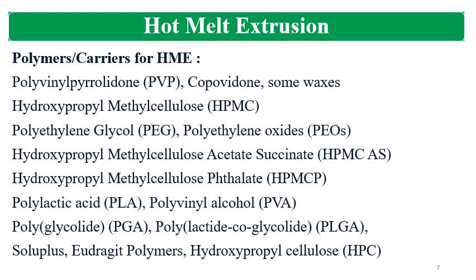Additional polymers for HME include HPMC, polyethylene glycol (PEG), polyethylene oxide (PEO), HPC, HPMC acetate succinate (HPMC-AS), HPMC phthalate, polylactic acid (PLA), polyvinyl alcohol (PVA), polyglycolide (PGA), polylactide-co-glycolide (PLGA), Soluplus, Eudragit polymers, and HPC. These are the polymers commonly used for the HME process.